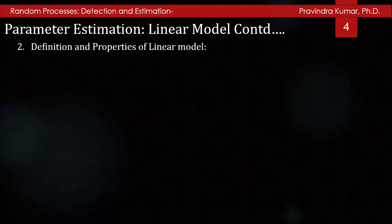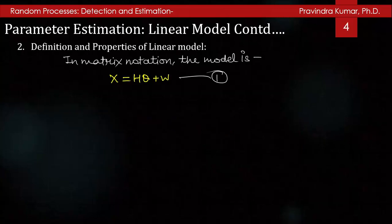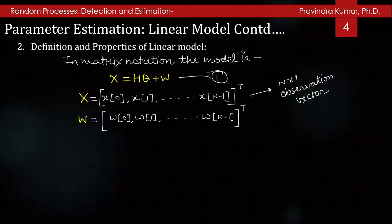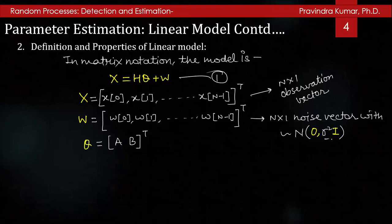In matrix notation the model can be represented as x = Hθ + ω, where x is the transpose of the matrix [x₀, x₁, ..., x_{N−1}], which is an N×1 observation vector. And ω is the transpose of [ω₀, ω₁, ..., ω_{N−1}], which is an N×1 noise vector with mean 0 and variance σ²·I. It is a normal random process.